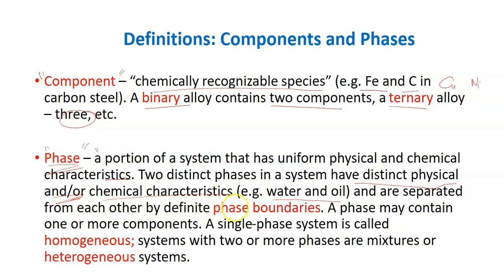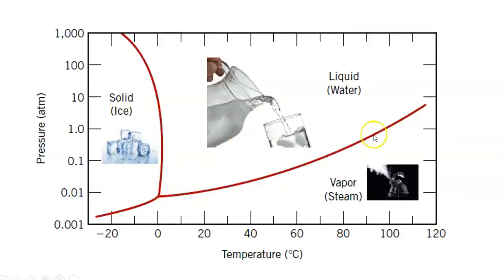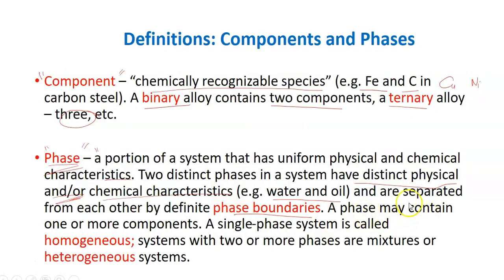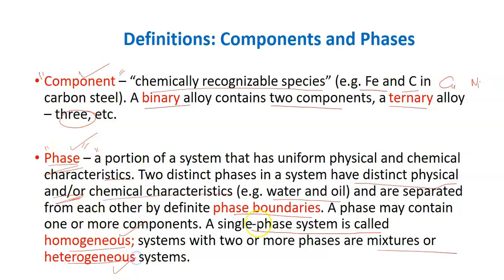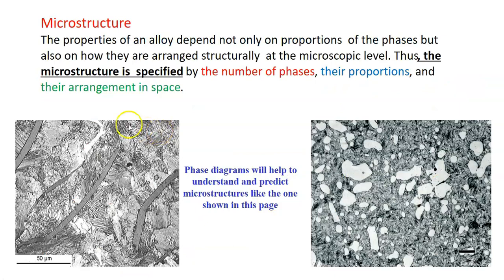Phases are separated from each other by definite phase boundaries. The red line here represents the phase boundaries, and the phases are solid, liquid, and vapor. A phase may contain one or more components. A single phase system is called homogeneous, while a system with two or more phases or mixtures is called a heterogeneous system.